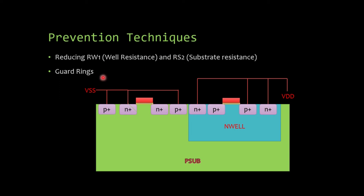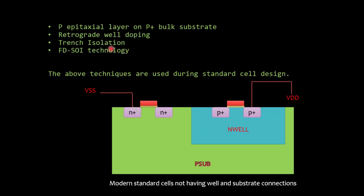Now let's see some latch-up prevention techniques. The first is reducing RW and RS resistances, as already discussed. The second is using guard rings. We can place a P-plus region and an N-plus diffusion strategically. In the previous scenario the P-plus region was far from the N-plus, creating significant resistance that caused the current to flow through the N-plus. By placing the P-plus guard ring close to the relevant region, the current flows directly through it. This breaks the latch-up feedback loop so the second transistor cannot turn on.